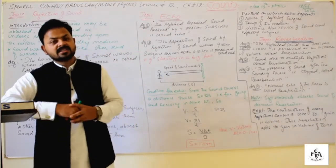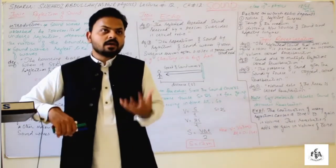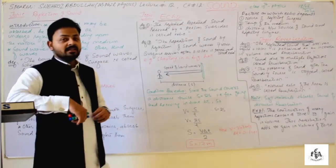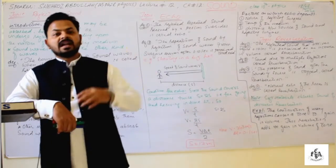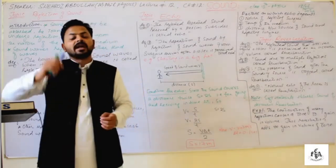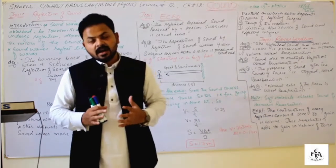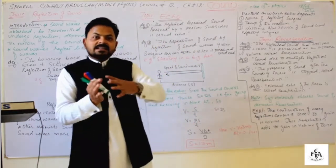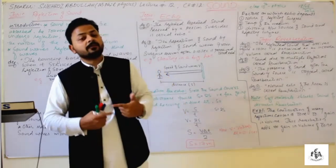Now we are going to connect towards echo. Echo is actually a reflected sound. When a person hears the same sound after each 0.1 seconds, this reflection of sound is now called echo. The phenomenon in which the original sound is again and again heard after each 0.1 seconds is called echo. Echo is a repeated reflection of sound waves heard after each 0.1 seconds.